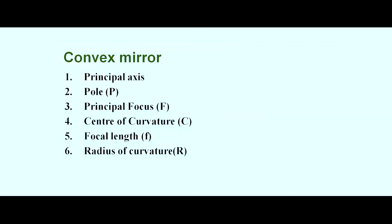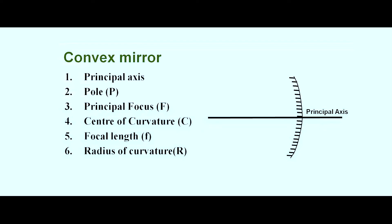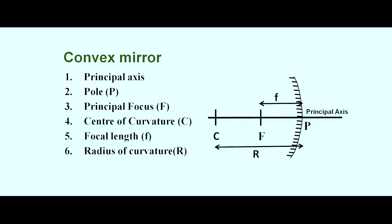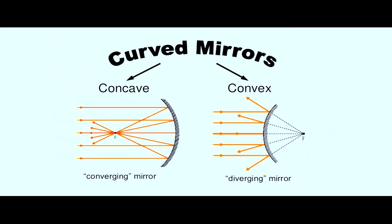Next, let's look at these features in the convex mirror. This is the convex mirror. The line cutting this mirror is the principal axis, and the point where the principal axis cuts the mirror is called the pole. The distance between the center of curvature and the pole is called the radius of curvature, denoted by R.